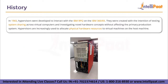History. In 1965, hypervisors were developed to interact with the IBM RPQ — RPQ standing for Request Price Quotation. This was done on the IBM 360/65, a member of the IBM System 360 family. They were created with the intention of testing system sharing across virtual computers and investigating novel hardware concepts without affecting the primary production system. Hypervisors are increasingly used to allocate physical hardware resources to virtual machines, also referred to as guests.